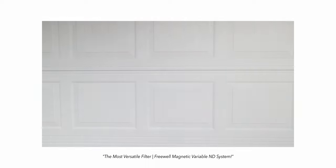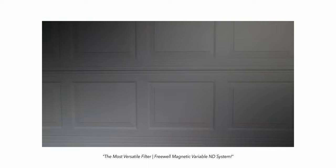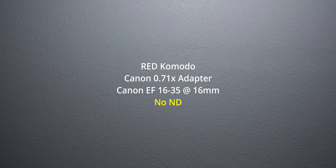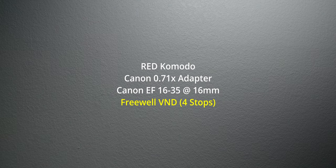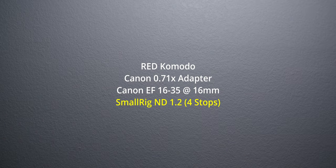I just realized I left out a pretty big disadvantage of variable ND filters: vignetting. Especially on a really wide lens on a full-frame sensor — even on the Komodo with the speed booster — you can get pretty bad vignetting in the corners. If you get that vignetting, you're going to have to crop in post. You don't really get that with square filters, because the square filter is much wider than the field of view.